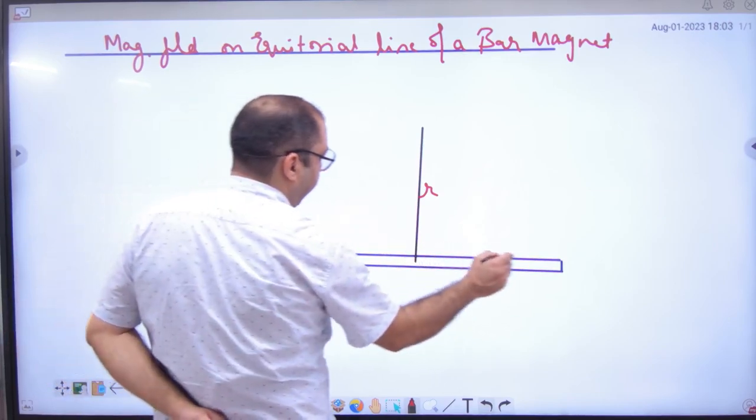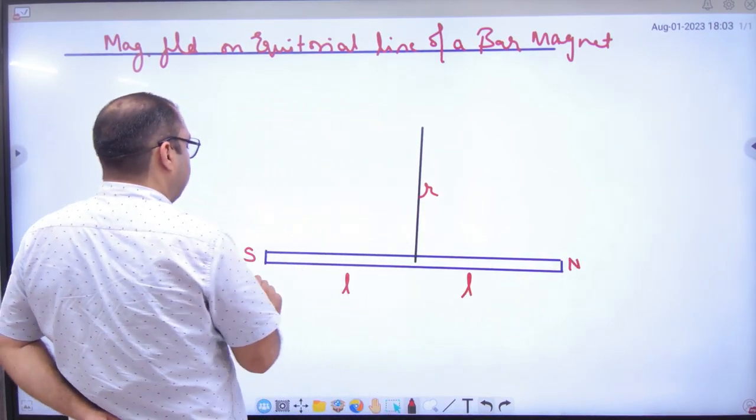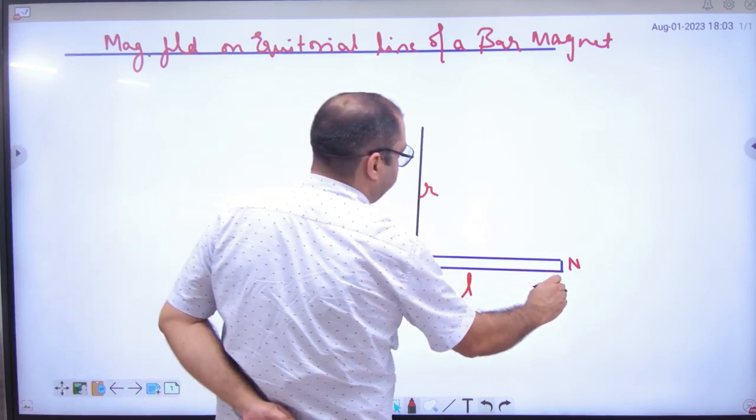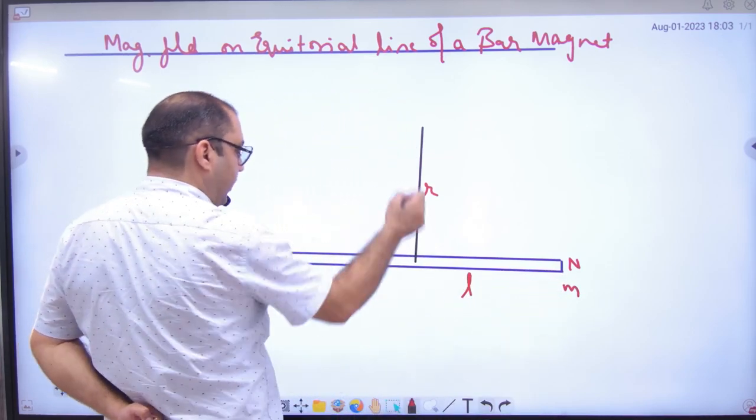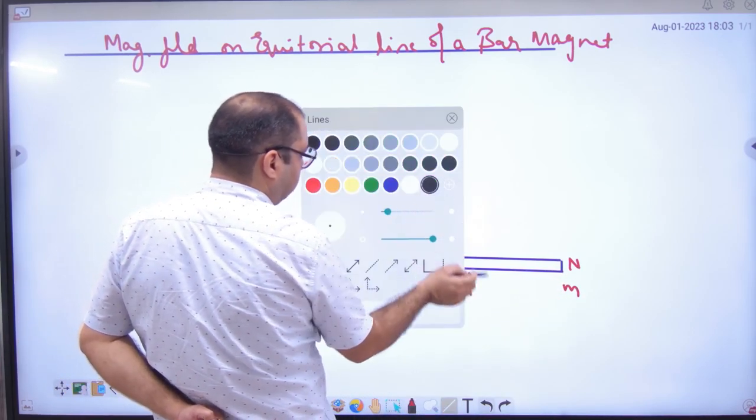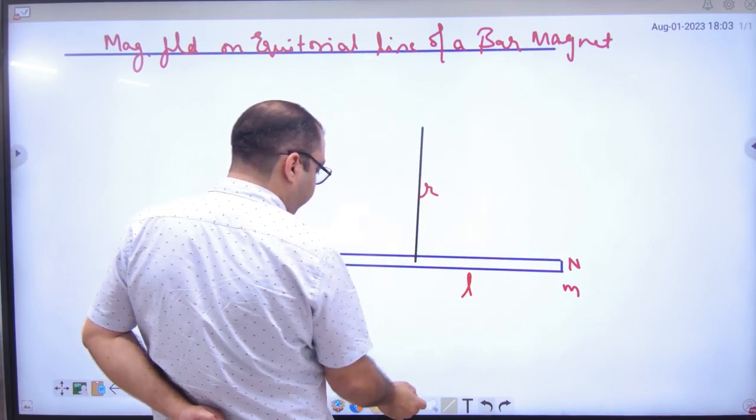This L, suppose North, South, pole strength M and M. This R.